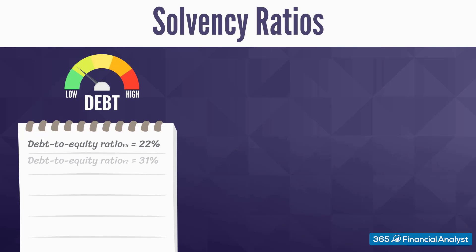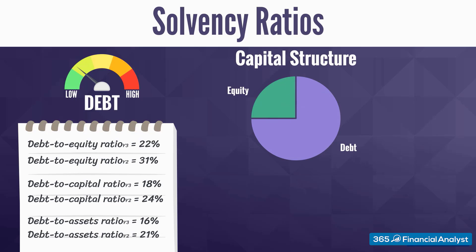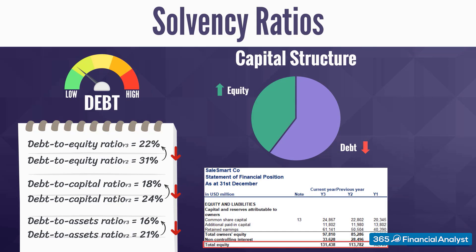Plugging figures into formulas is a job half-done. You must be able to extract indicative information about a firm from these results. All three ratios show that SalesSmart experiences an improvement in its solvency indicators. Its debt decreases as a portion of total equity, total capital, and total assets. The firm hasn't taken any excessive loans and instead relies more on equity financing, evidenced by the equity section in the Statement of Financial Position, which increases significantly through accumulated and retained earnings.